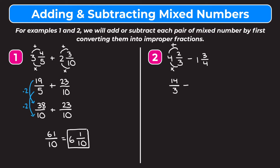And now for 1 and 3 fourths we're going to multiply 1 and 4 which is just 4, add that to our numerator of 3. 4 plus 3 is 7. So we get 7 as our numerator and our denominator stays as 4. So we have 14 thirds minus 7 fourths.